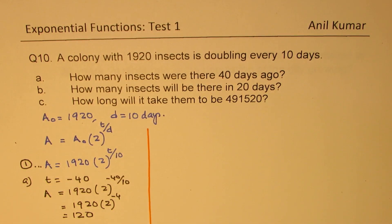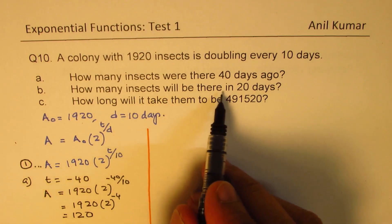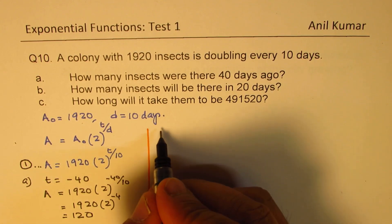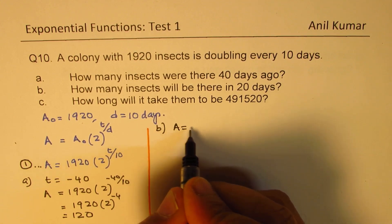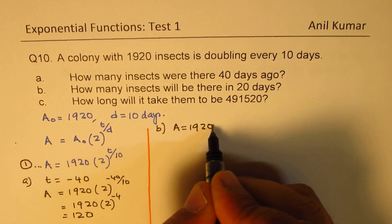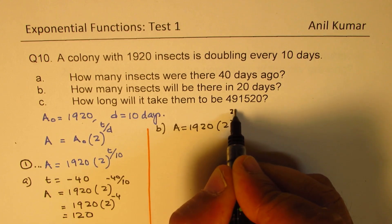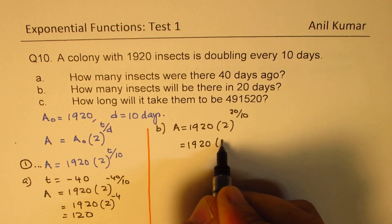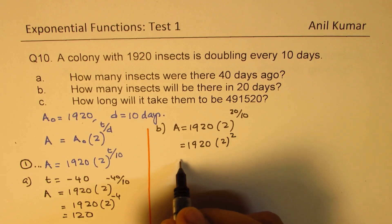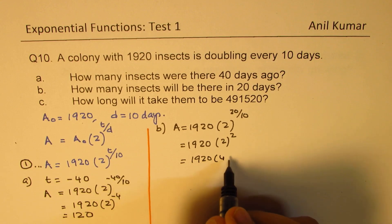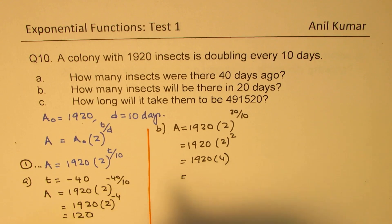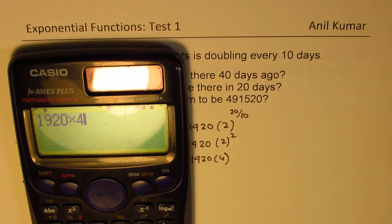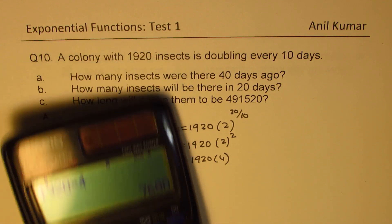Now let's do part B: how many insects will there be in 20 days? We replace T with 20. So A equals 1920 times 2 to the power of 20 over 10, which is 1920 times 2 to the power of 2, which is 4. So 1920 times 4 gives us 7680.